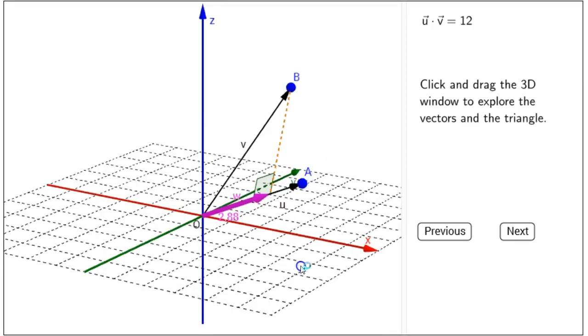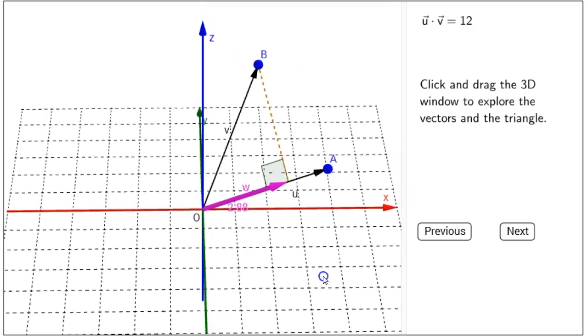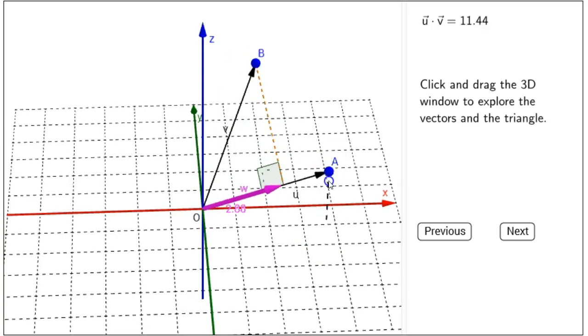The pane on the left shows a three-dimensional view, and there are two vectors. Both of these vectors have their tails at the origin. Vector U has its head at point A, and vector V has its head at point B. I can move around A and B to change those vectors as I like.